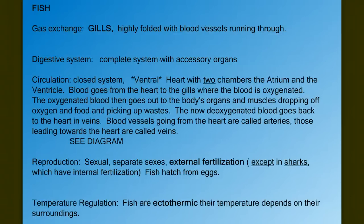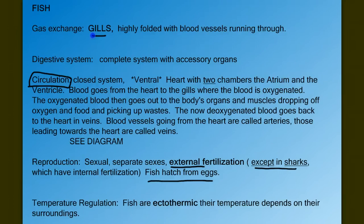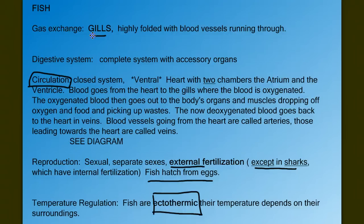Moving to general fish information that applies to basically all fish: most fish have external fertilization with the exception of some sharks, and all fish hatch from eggs. Some sharks appear to have live births, but the female just holds the eggs in her body — all fish still hatch from eggs. Fish are also ectotherms, meaning their body temperature depends on the external temperature of the water. This is not as big a deal for fish as for terrestrial animals, because large bodies of water change temperature very slowly.